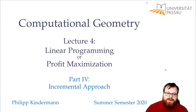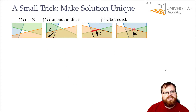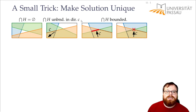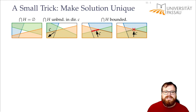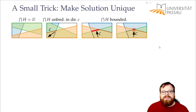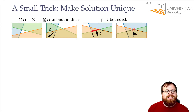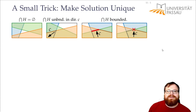Our first problem is it's not clear how the maximum looks. We had all these four cases: no intersection, unbounded in the direction of C, a segment, or a point. If we want to find the maximum, we want to give back a single point. From a segment we want to give back a single point; for unbounded we say it's infinite; for no intersection we say no. So we want to make the solution unique. These two cases don't have a unique solution, but maybe we can pick in advance which solution to give back.